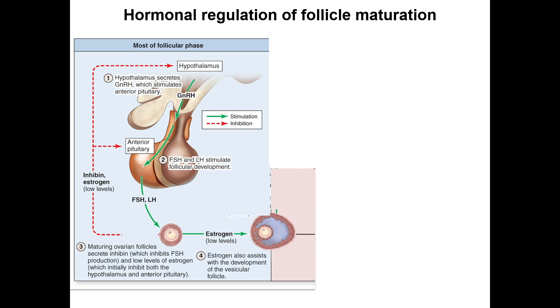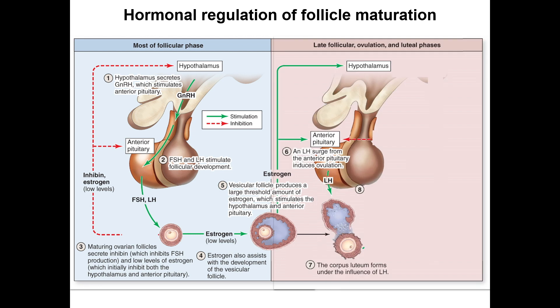Estrogen also helps the mature follicle to develop. The mature vesicular follicle produces a large threshold amount of estrogen. Midway through the ovarian cycle, this estrogen level reaches a point where negative feedback flips to positive feedback on the hypothalamus and anterior pituitary, resulting in a surge in luteinizing hormone that triggers meiosis of the dominant oocyte, followed by ovulation.